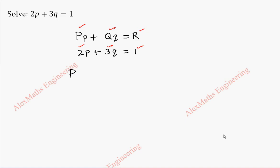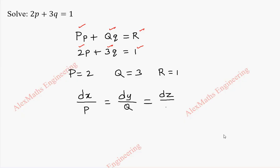So we take it separately: P is 2, Q is 3, and r is 1. We are going to solve the given equation by solving dx by P equal to dy by Q equal to dz by R. By substitution we get dx by 2 equal to dy by 3 equal to dz by 1.